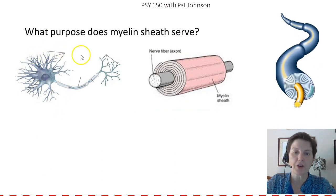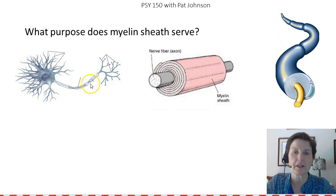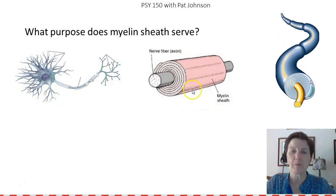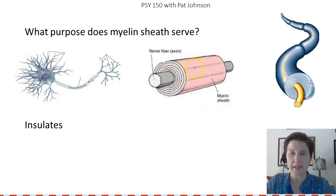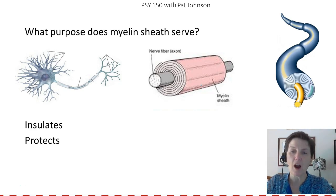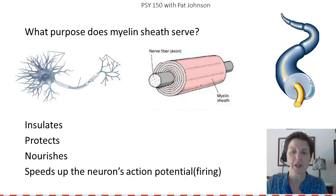Here's our neuron. This is the axon right here, and this white part covering it is called myelin sheath. If you notice, there are little spaces of exposed axon between these bundles of myelin sheath. Myelin sheath insulates — it covers and insulates the neuron from other messages from other neurons. It protects our neuron's axon, nourishes it, and speeds up the neuron's action potential.